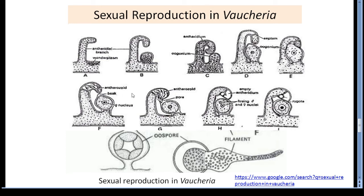Now fertilization: in the mature oogonium, the beak gets gelatinized to form an opening. A mucilaginous mass is produced at the beak which attracts the antherozoids towards the oogonium. Many antherozoids enter the oogonium through the opening, but only one antherozoid fuses with the egg to form a diploid zygote. The zygote secretes a multilayered wall around it and becomes an oospore.